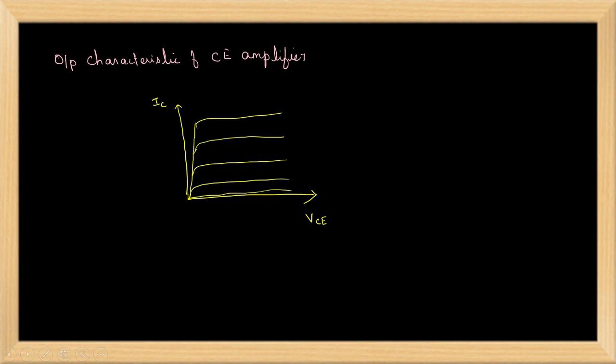This is the output characteristic of the CE amplifier. Output characteristic is drawn between VCE and IC keeping IB as a constant. Now, if the operating point is considered near the saturation region, for example, if you consider near this region, when you give the input signal, the part of the signal is clipped off.